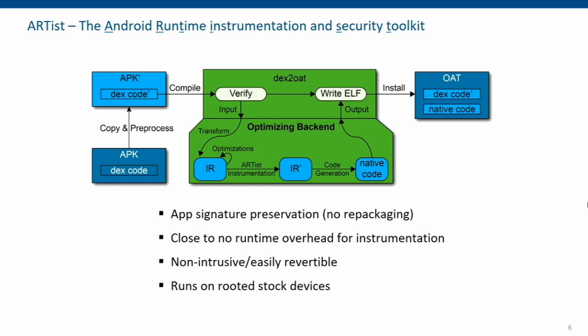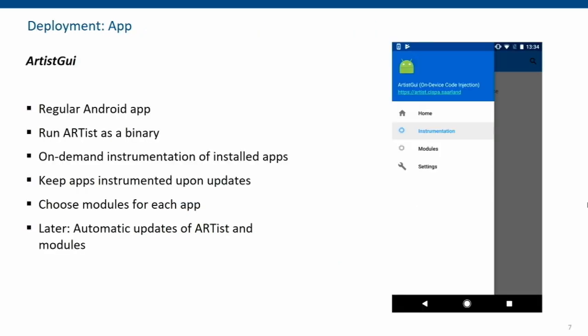The big advantage is that it runs on rooted devices — you don't need to unlock your bootloader, you don't need to flash anything, you don't have to change your operating system. The only time we need root is this single step of replacing one OAT file with another, because executable code is in a protected location. The ARTIS GUI or wrapper app is the convenience wrapper around the command-line tool: it searches for the correct APK, inputs it into ARTIS, pushes the new OAT file to the correct location, and manages instrumentation modules.